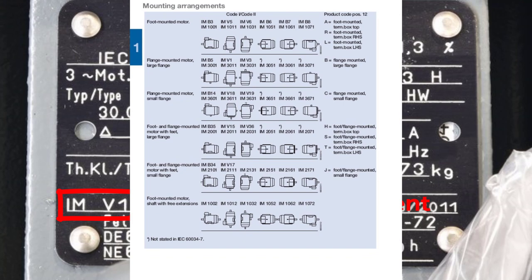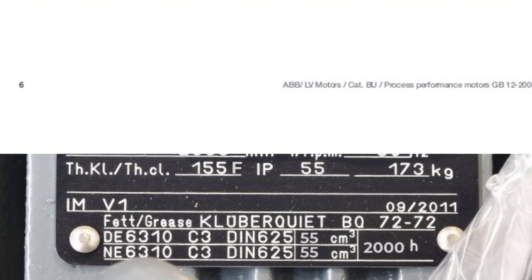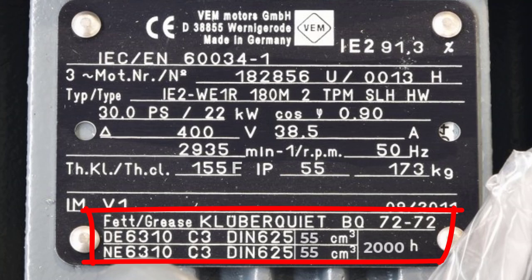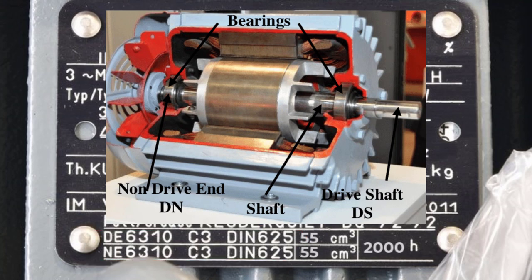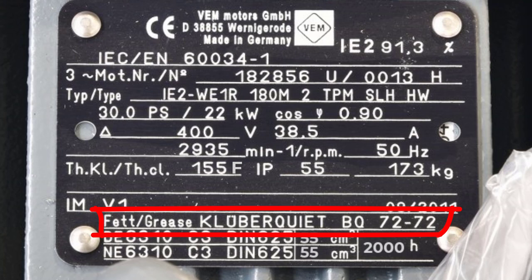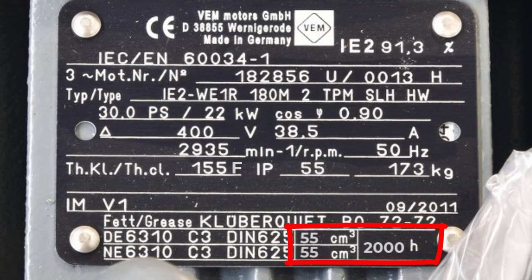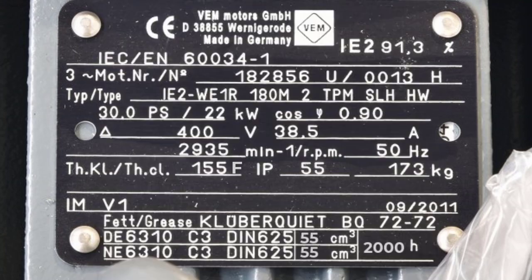IM V1 is the mounting arrangement factor, describing how the motor is mounted — foot mounted, flange mounted, or both, and whether horizontal or vertical. In our case, IM V1 is large flange mounted vertical. The bearing-related factors include the type of drive-end and non-drive-end bearings, the amount of grease to inject using a grease gun after specific running hours, and the type of grease to use. In this example, 55 grams should be injected every 2000 running hours.